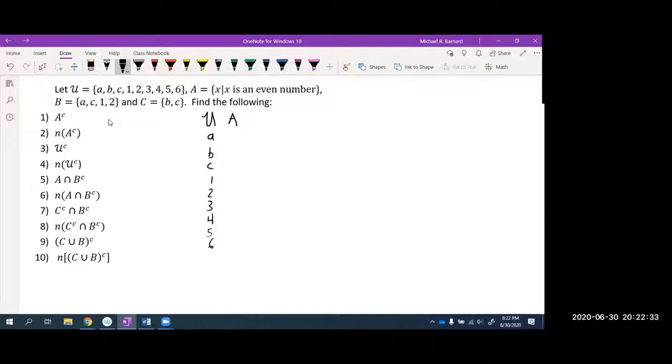And you can see here A is all the elements that are even numbers. Now, that doesn't mean that 32 and 44 and 58 are all members of A. They are even numbers, but the universal set puts a limit on what elements we're considering in a problem. So that's why we need to know what the universal set is.